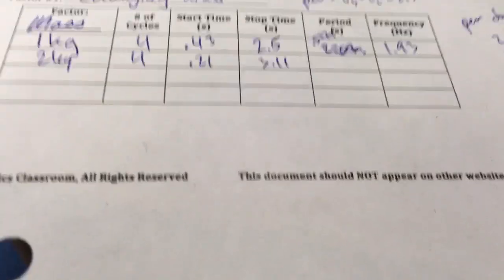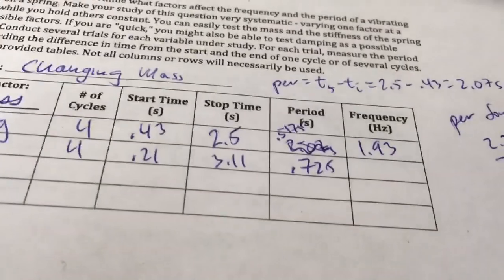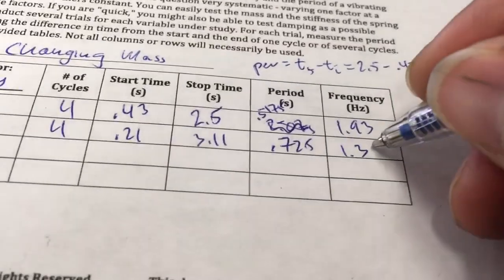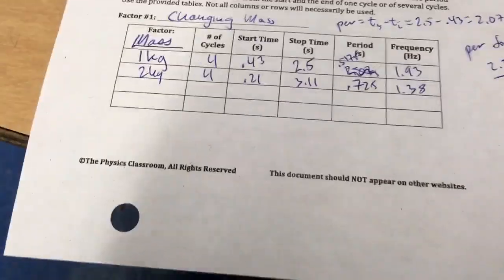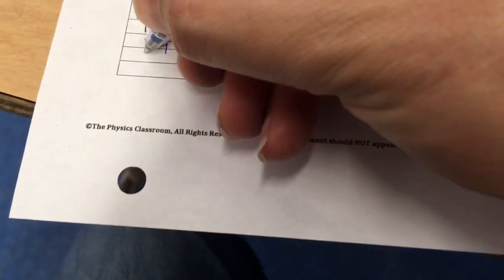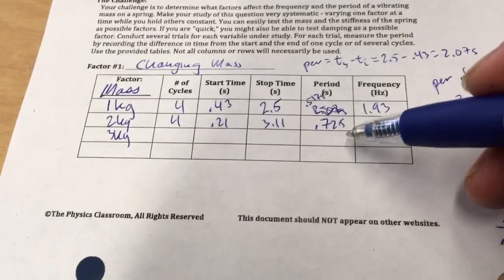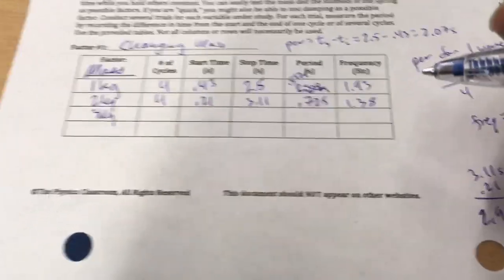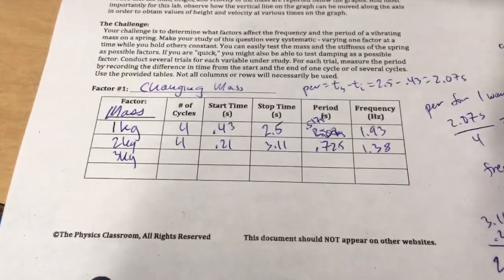So, the period that we had, 0.725 seconds. And the frequency was 1.38. And you can start to see a pattern. And if I keep going with 3 kilograms, the period will continue to get longer, and the frequency of the waves will continue to get shorter. So, that's a factor that affects frequency and period.